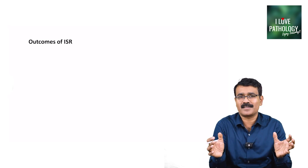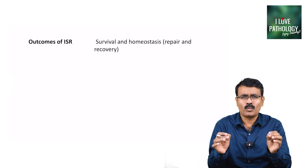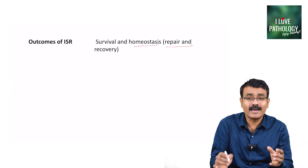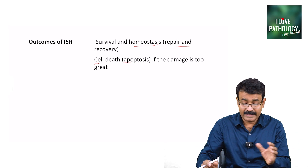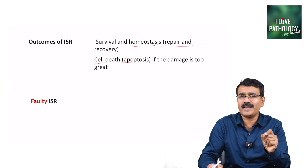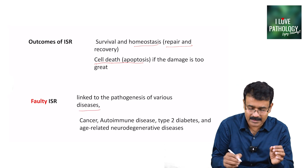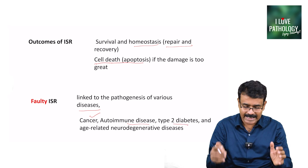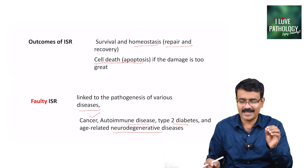Why do we need to know about integrated stress response? The outcomes basically determine whether cells survive and restore homeostasis — repairing and recovering — or whether the cell goes for apoptosis if the damage is too severe. When we have a faulty integrated stress response, it is linked to various diseases including cancers, autoimmune diseases, type 2 diabetes, and various age-related neurodegenerative diseases. That is the importance of knowing integrated stress response.